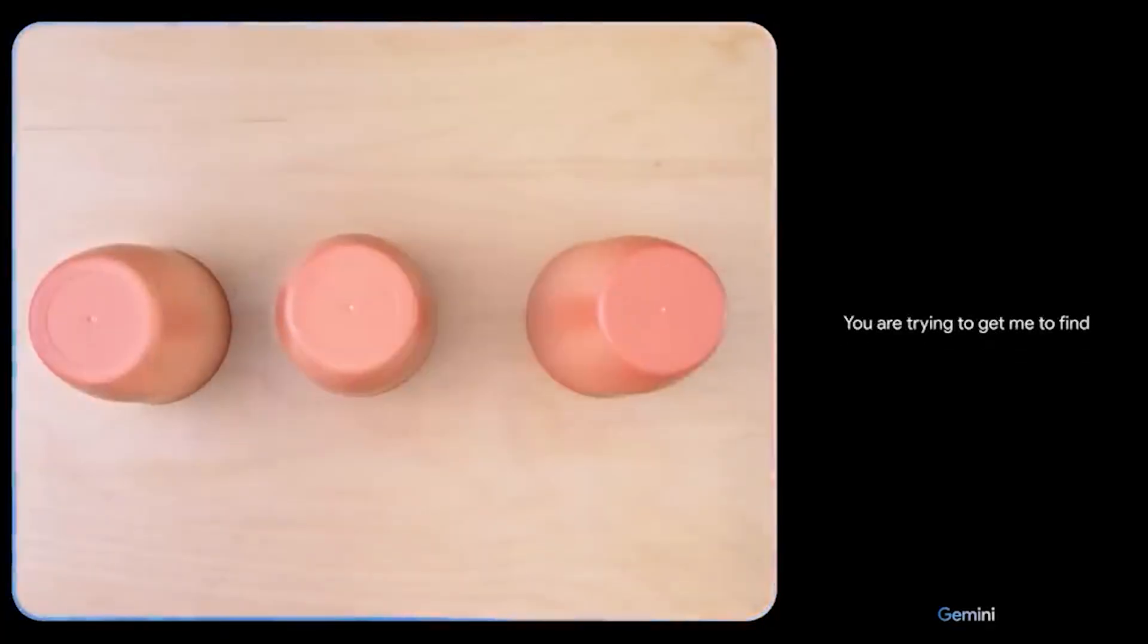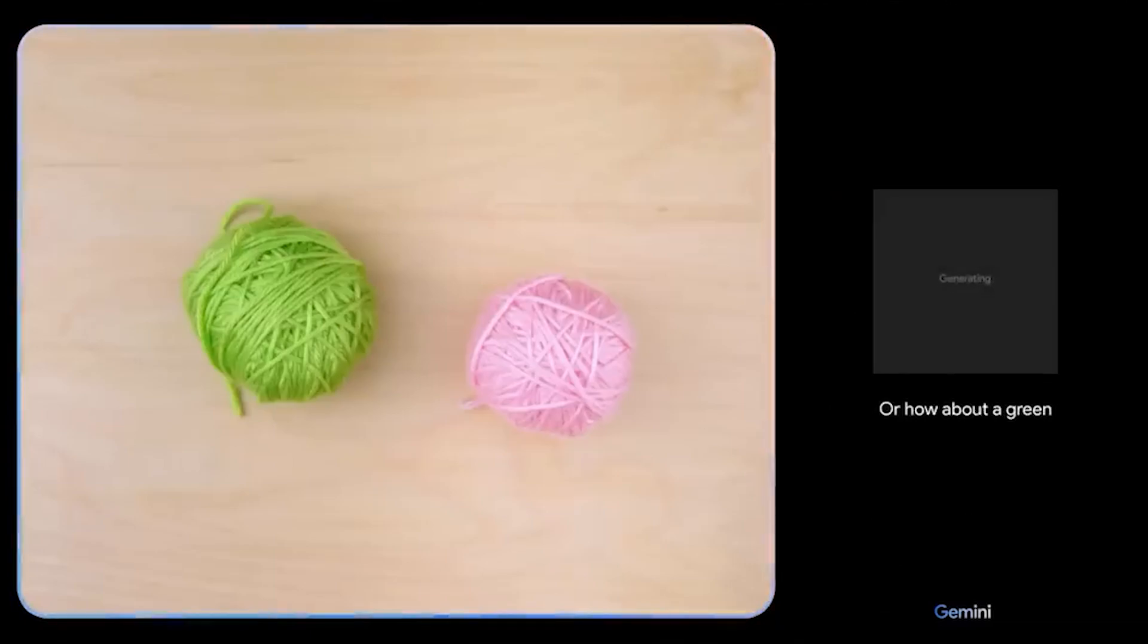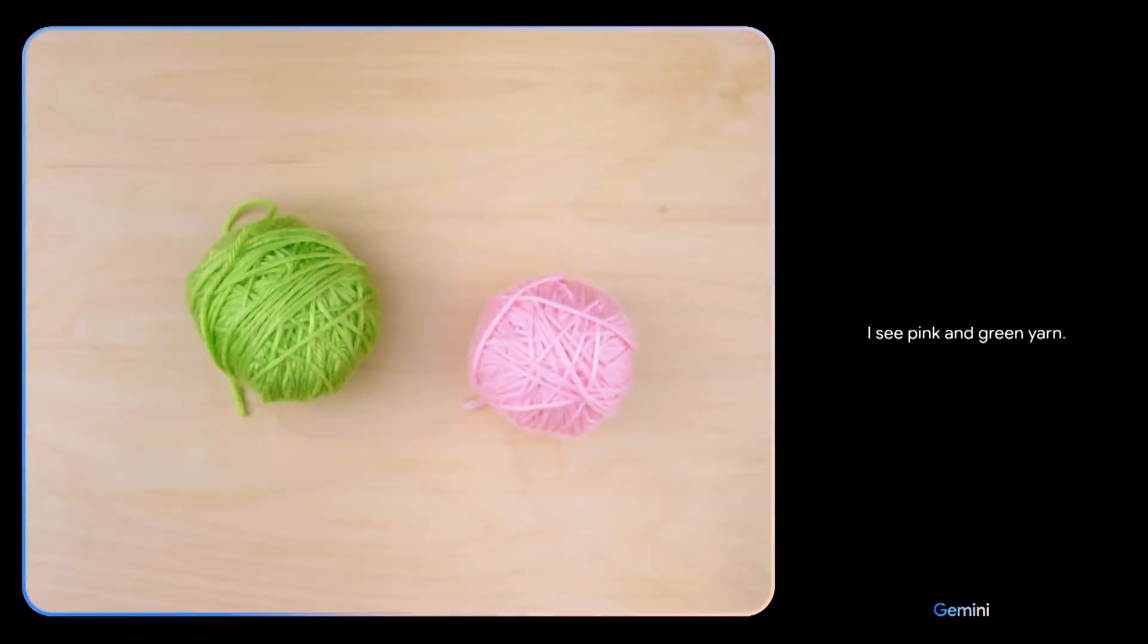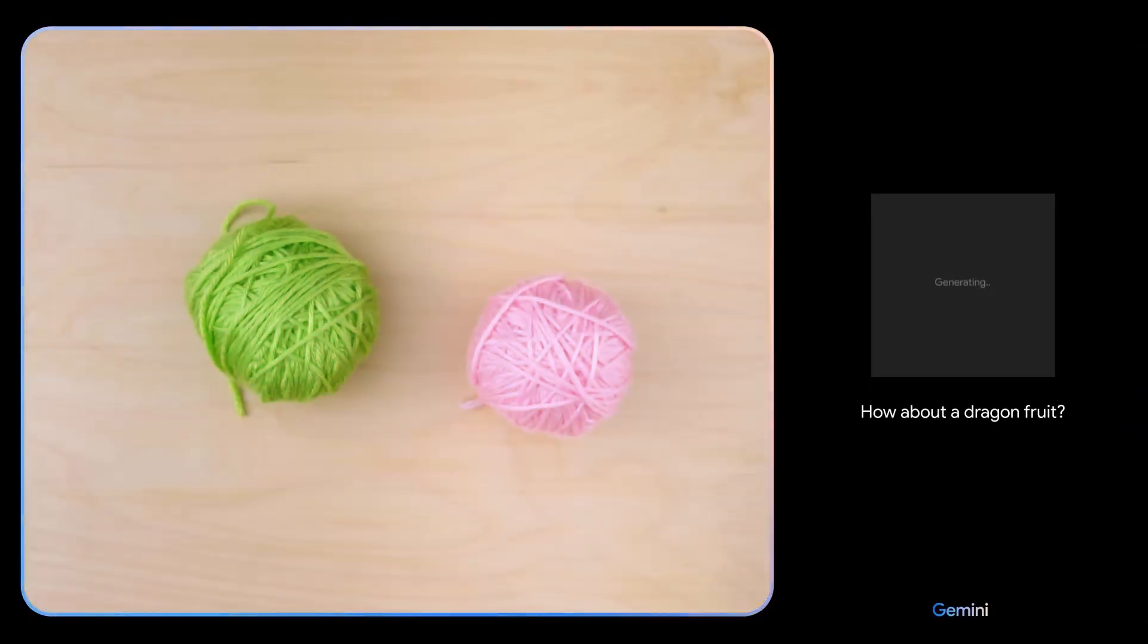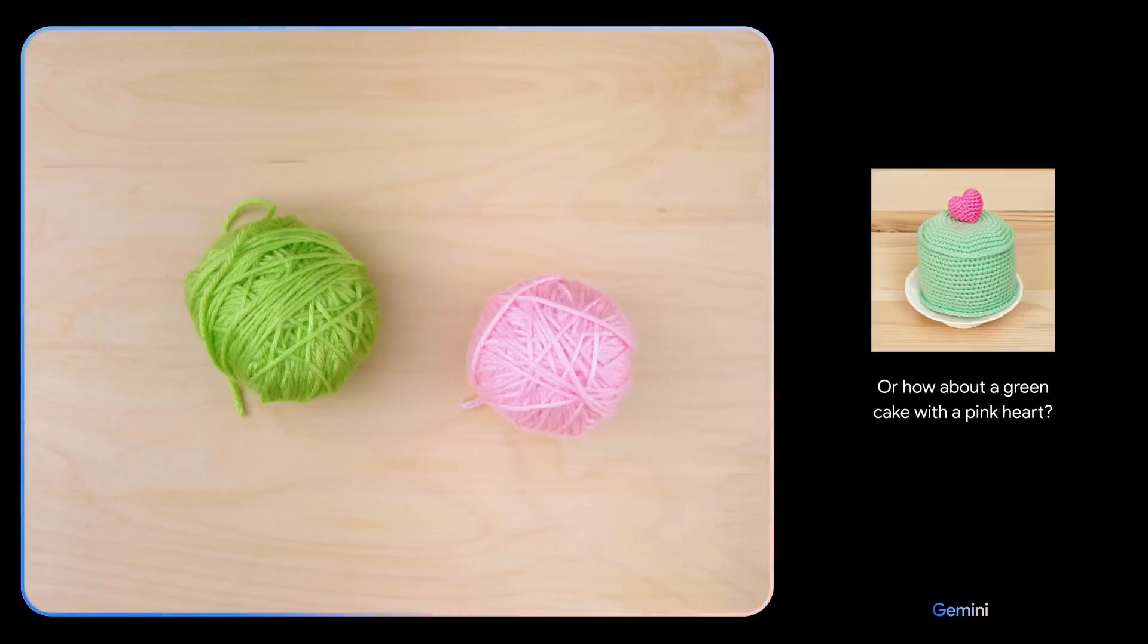In another task, Gemini is presented with an object and asked to come up with creative uses for it, like using yarn to make a dragon fruit or a green cake with a pink heart. I see pink and green yarn. How about a dragon fruit? Or how about a green cake with a pink heart?